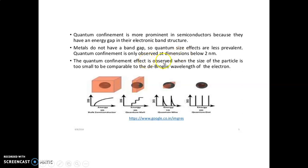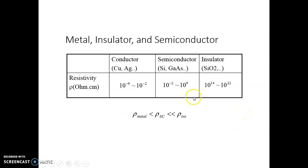Quantum confinement effect is observed when the particle size is very small, comparable to the de Broglie wavelength. The differentiation of metal, insulator, and semiconductor is shown using resistivity. For conductors such as copper and silver, resistivity is around 10 to the power of minus 6 ohm-centimeter. For semiconductors like silicon and gallium arsenide, resistivity ranges from 10 to the power of minus 2 to 10 to the power of 9. For insulators like silicon dioxide, resistivity is very high — from 10 to the power of 14 to 10 to the power of 22.